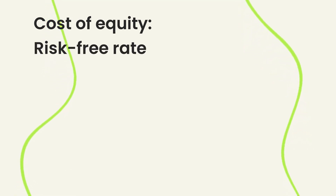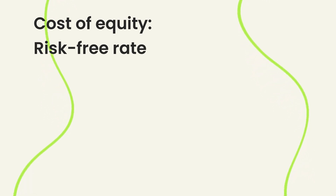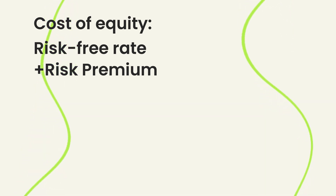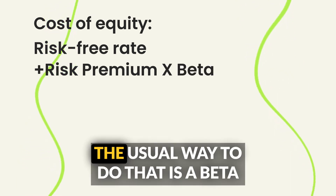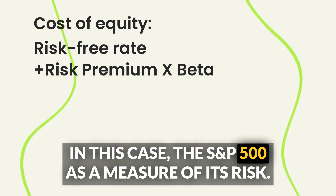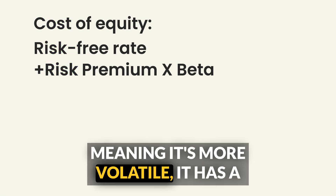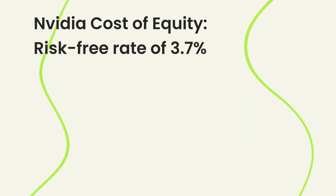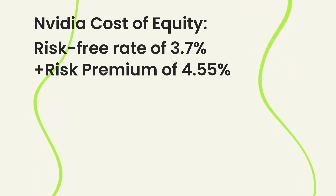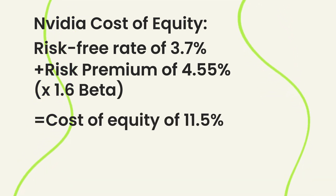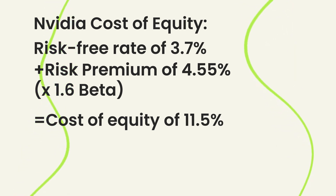It starts with the risk-free rate based on US government bond rates. We add a risk premium, usually four to five percent, which represents the historical additional returns that stocks typically get on top of the risk-free rate. Then we adjust the risk premium for the specific company — the usual way is a beta calculation, which is essentially the sensitivity of the stock price relative to the benchmark, in this case the S&P 500. More volatile stocks have a higher beta, so the equity discount rate will be higher. The current risk-free rate is about 3.7%, the risk premium is about 4.5–4.6%, and NVIDIA's beta over the past five years is about 1.6. Multiplying 1.6 times the risk premium of 4.6% gives us our adjusted risk premium, and adding that to the risk-free rate gives a cost of equity of about 11.5%.